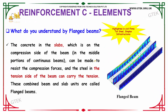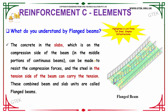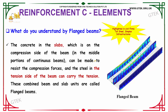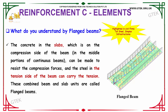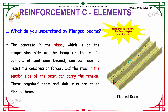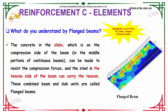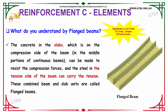Our next question is: what do you understand by flanged beams? The concrete in the slabs which is on the compression side of the beam, that is in the middle portions of continuous beams, can be made to resist the compression forces, and the steel in the tension side of the beam can carry the tension. These combined beam and slab units are called flanged beams.